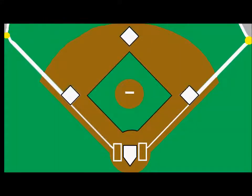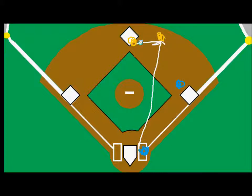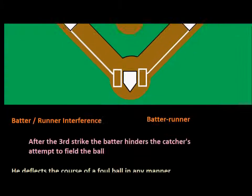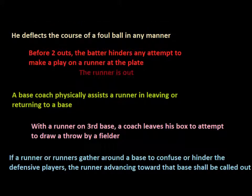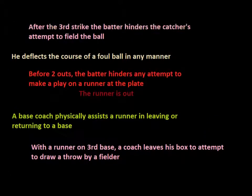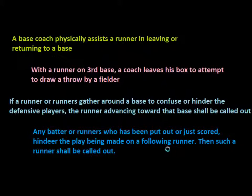This could happen not only at home plate, but a lot of times you might see this if there's a double play being made. If we have a runner and the batter hits a ground ball maybe to the second baseman, and the second baseman flips the ball to the shortstop, then this runner who started on first base has to get out of the way and allow the shortstop to make the throw. He can't interfere in any way, or he would be out and the runner could be called out for interference.